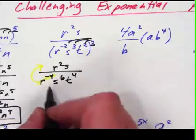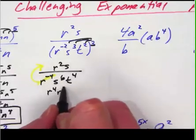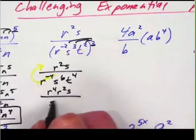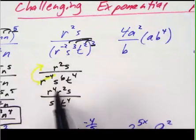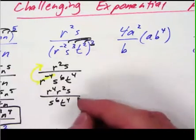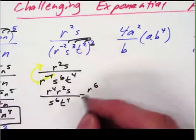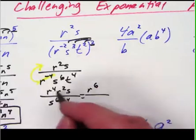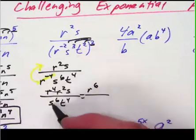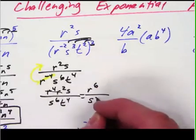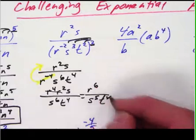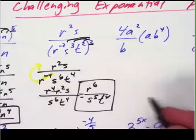So then by taking that move I've got r to the fourth, r to the second, s all over s to the sixth, t to the fourth. r to the fourth and r to the second make r to the sixth and then that combines those two and then here is one s and six s's so I have five more s's in the bottom and then a t to the fourth and there is the answer and that's how you get it.